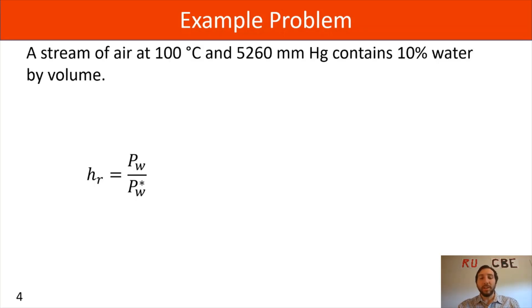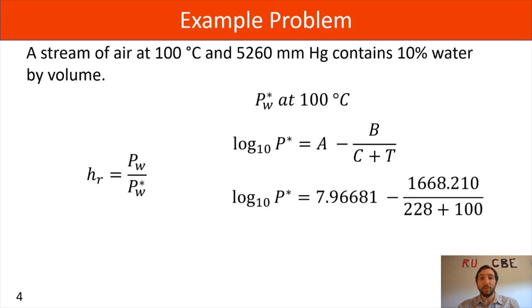We need to solve for both of these components. We'll first start with Pw star at 100 degrees Celsius, and we can use the Antoine equation to help us solve this problem. As a reminder, you would need to go to the appendix or a table with Antoine coefficients to calculate your P star. We've got our Antoine equation, and looking at the table, we substitute those values in along with the temperature of 100 degrees Celsius into our equation.